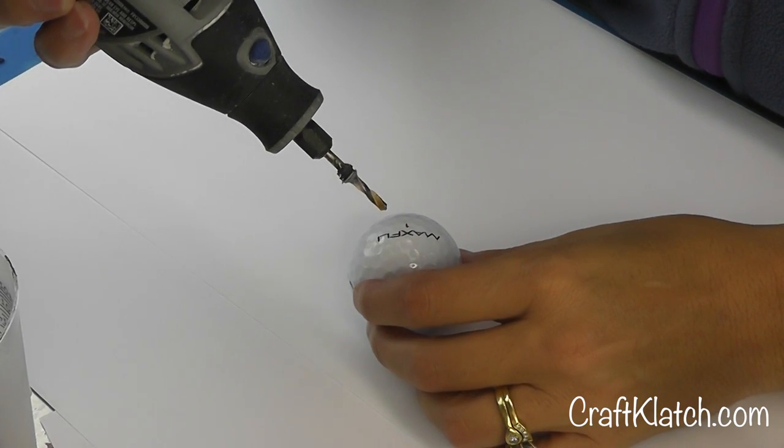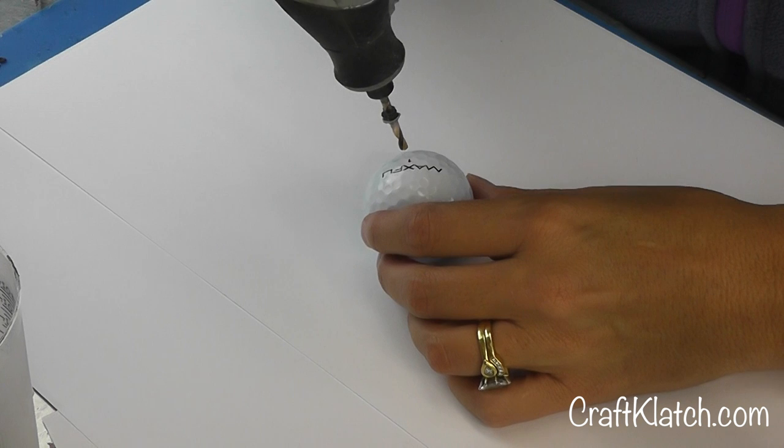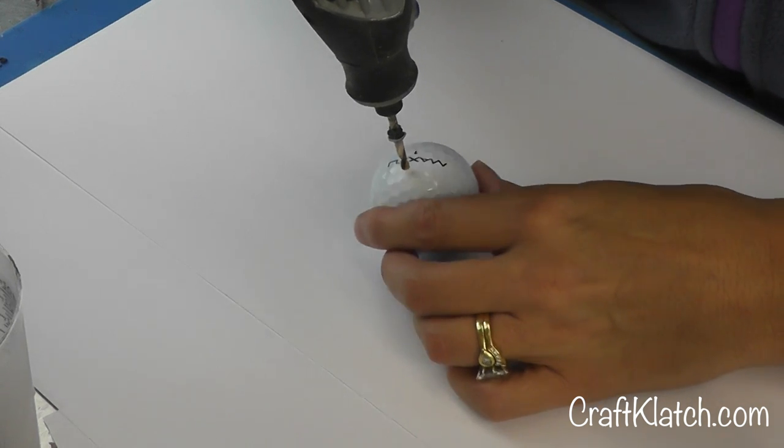To make the elephant head, all I'm going to do is take my Dremel tool and drill a hole right in the top so that we can hang them like an ornament.